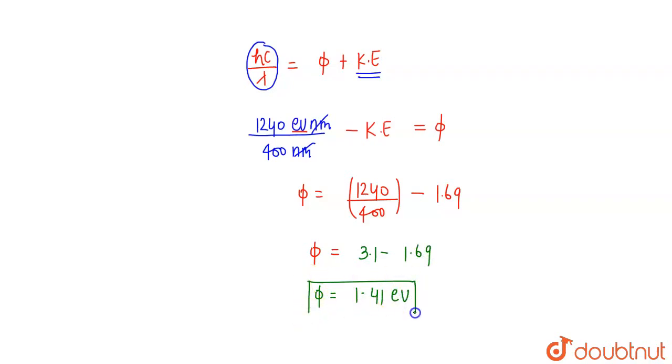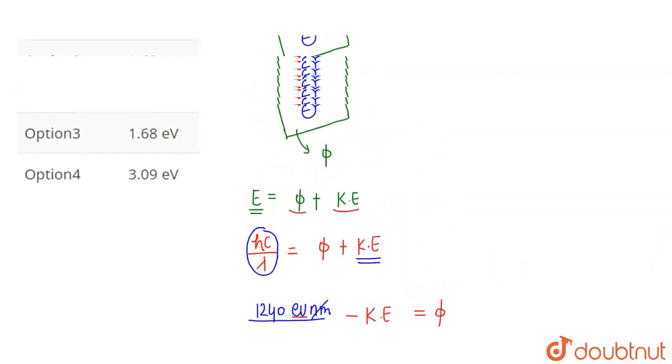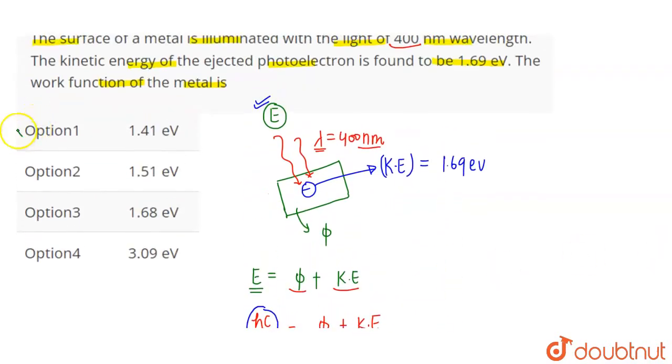The work function of the metal is 1.41 electron volts. So option number 1 is the correct answer. Thank you.